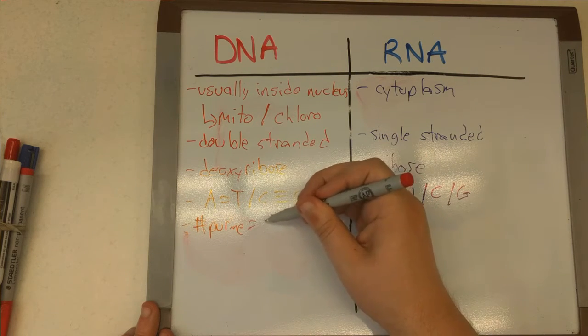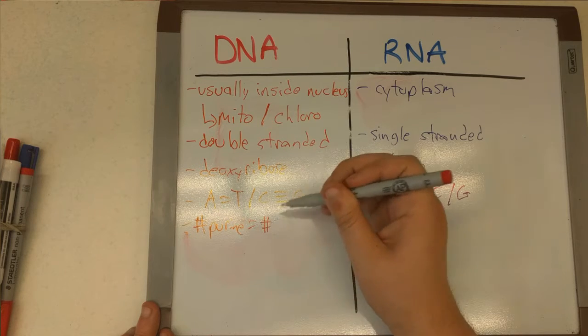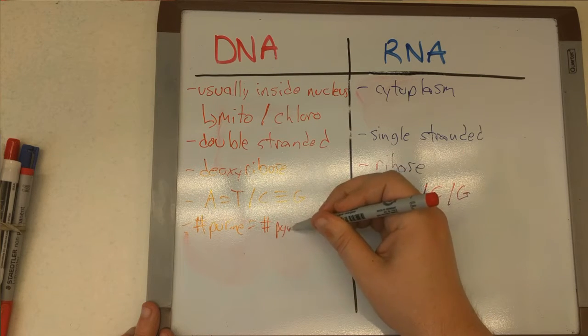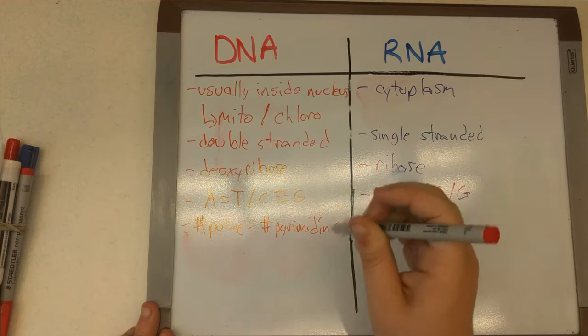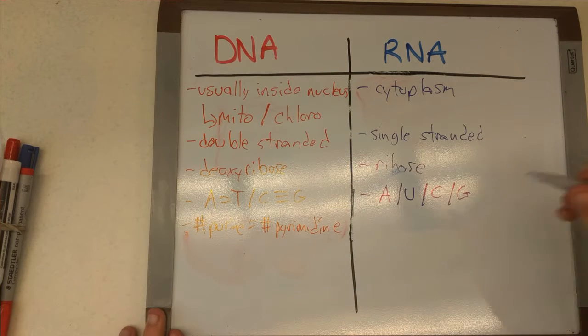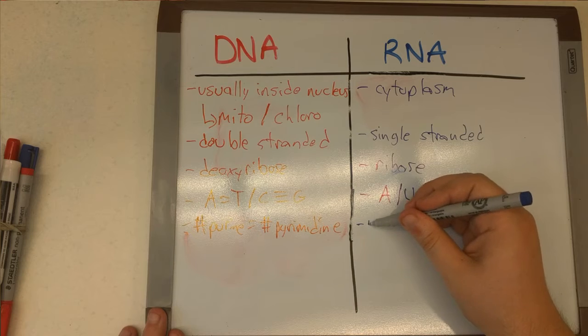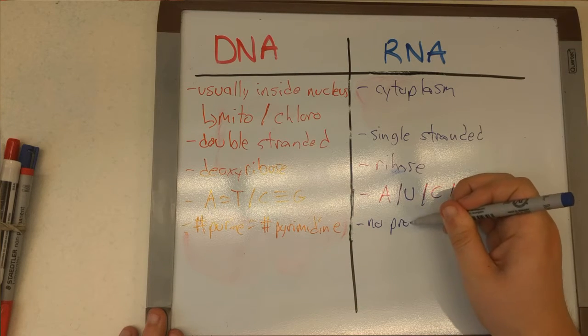And also because of the base pairing in DNA, the number of purines have to be equal to the number of pyrimidines. This is also known as Chargaff's rule, so your number of A's and G's have to equal your number of C's and T's.